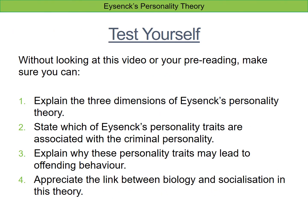You can read about Eysenck's personality theory in more detail in the pre-reading. Before you come into the lesson, make sure you can explain the three dimensions of Eysenck's personality theory, state which personality traits are associated with a criminal personality, and explain why those personality traits may lead to offending behaviour. Also have an appreciation for the link between biology and socialisation in this theory.